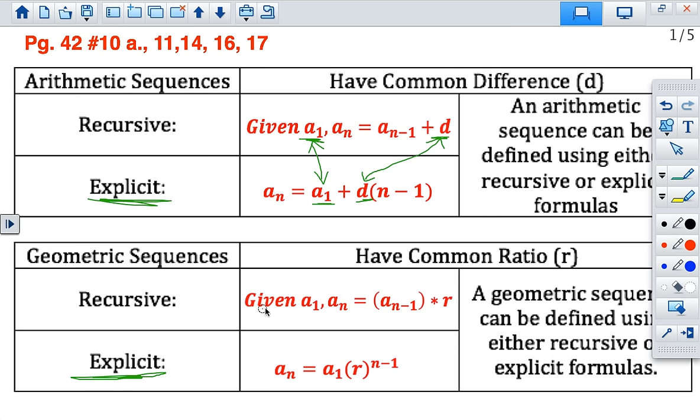And then let's look at the geometric sequences. Again, you have your A sub 1s. You just need to know where to put them and your common ratios and your previous term here. With explicit formulas, you don't have a previous term. With recursive, you have to have the previous term before you can find the next one. All right. So let's look at some example problems.